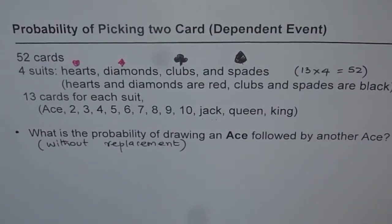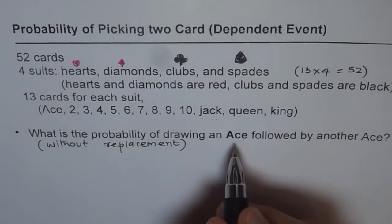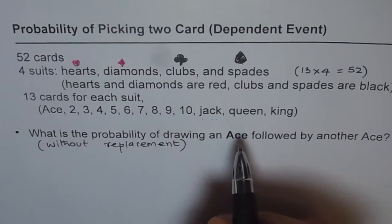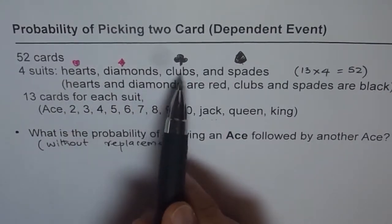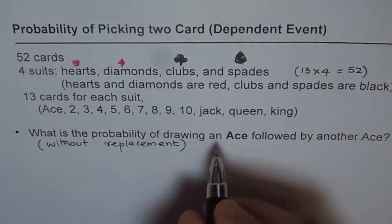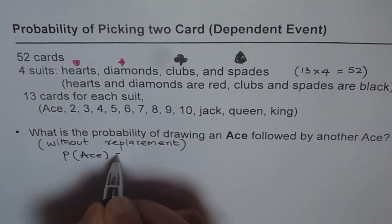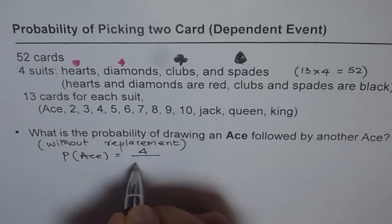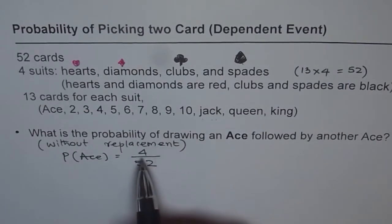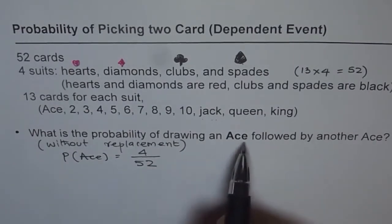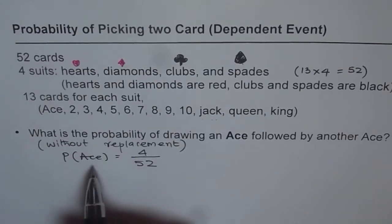So that is what we need to figure out. How many aces are there in a deck of cards? There is one of each kind — one ace of hearts, ace of diamonds, ace of clubs and ace of spades. So the probability of getting an ace is 4 out of 52. There are a total of 52 cards in the deck and 4 of them are aces. That is the first probability — the probability of drawing an ace.